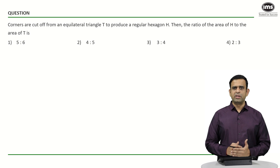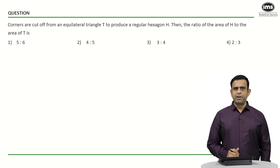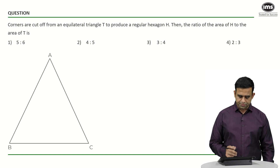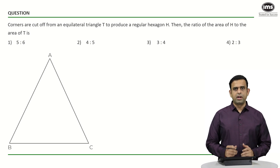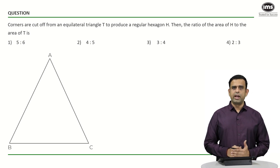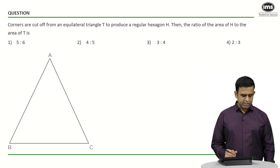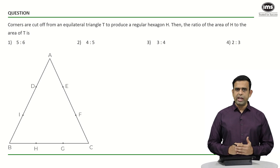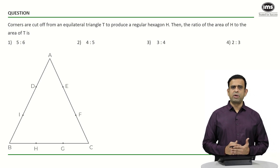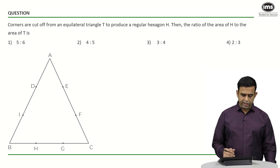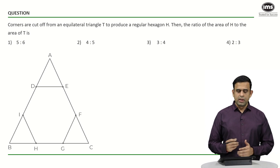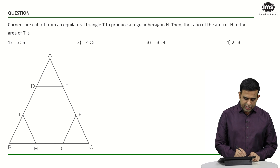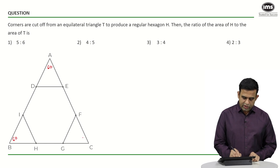There are a couple of methods to solve this question. In Method 1, we have triangle ABC and we cut the corners off to create a regular hexagon. Taking points D, E, F, G, H, I as the vertices of the hexagon, the angles at each corner are 60° since the triangle is equilateral.